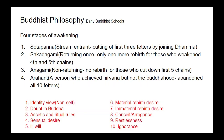According to early Buddhist school, there are ten fetters or chains that bind a human being to samsara. These ten fetters are: identity view or non-self; doubt in Buddha; ascetic and ritual rules; sensual desire; ill will; material rebirth desire; immaterial rebirth desire; conceit or arrogance; restlessness; and ignorance.